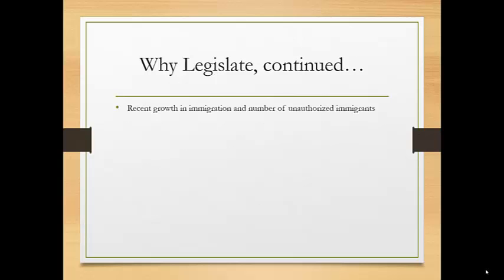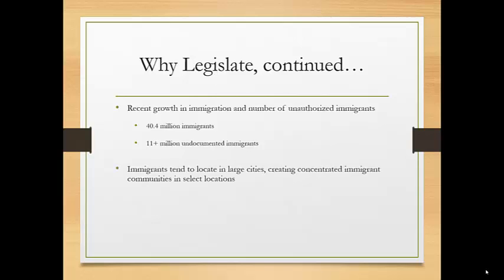The answer is again complex. On one hand, there's been recent growth in immigration and the number of unauthorized immigrants. There are 40.4 million immigrants in this country and it's estimated that over 11 million are undocumented. As the economy has struggled, this number has gone down somewhat, as people who come here for employment leave when it doesn't exist. Immigrants tend to locate in large cities, creating concentrated communities, but they've also increasingly located in non-traditional areas not accustomed to having immigrants.